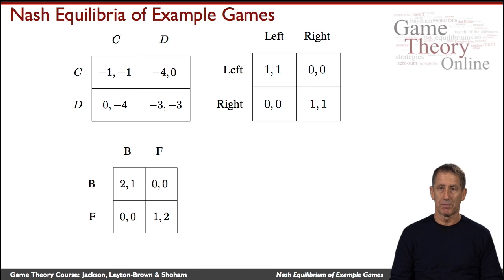The wife would prefer to go to Battle of the Titans, and the husband would prefer to watch flower growing. But more than anything else, they would want to go together. And so here are the payoffs. If they both go to Battle of the Titans, then they're both positively happy, the wife more than the husband. If they both go to the flower growing movie, then the husband is slightly happier than the wife. But if they go to different movies, neither of them is happy.